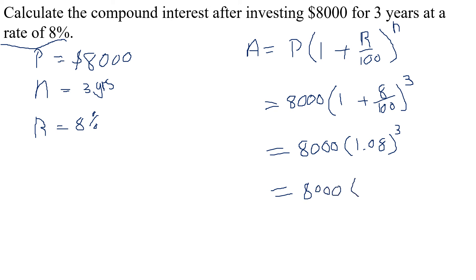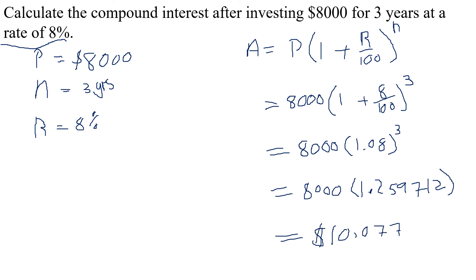So we have 8,000 multiplied by 1.08 cubed. When you calculate 1.08 cubed, you get approximately 1.259712. Then multiplying that by 8,000, your final answer would be $10,077.70, rounded to the nearest cent — or two decimal places. This is our answer: after three years, you will accumulate a compound interest amount of $10,077.70, which is the amount accruing.